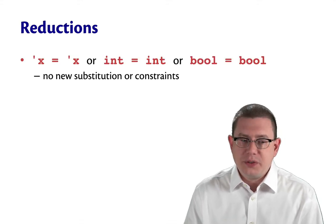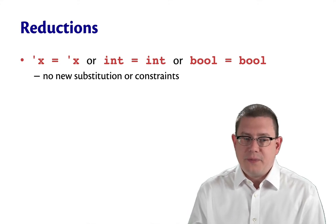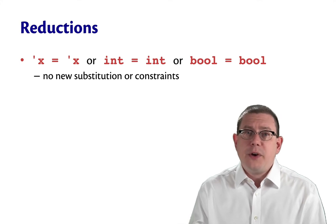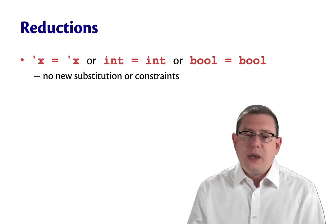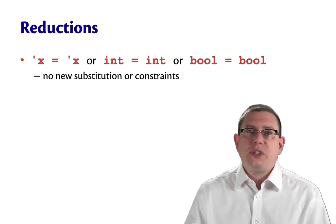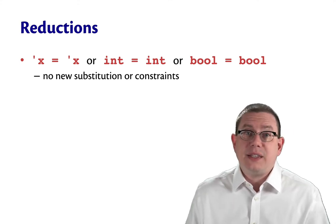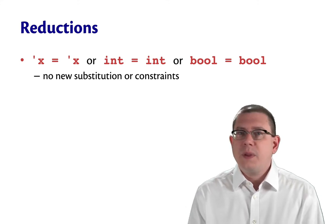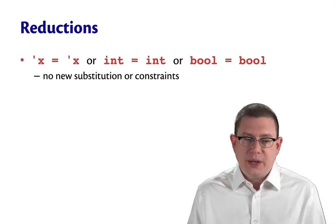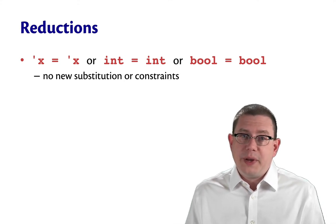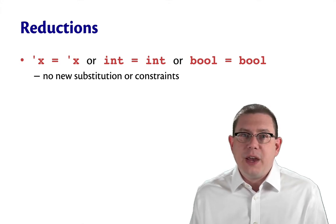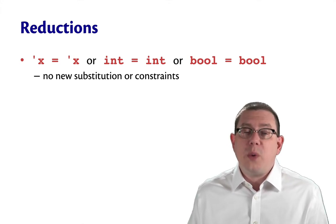How about those reductions? There are only a few different forms they can have. The first is we might take a constraint out of the set that's a trivial kind of constraint — it might say int equals int, or bool equals bool, or tick-x equals tick-x for some type variable tick-x, where the same type variable appears on both sides of the equality. There's no interesting information to extract, no new substitutions, and no new constraints to add back. We can just throw it out and continue.